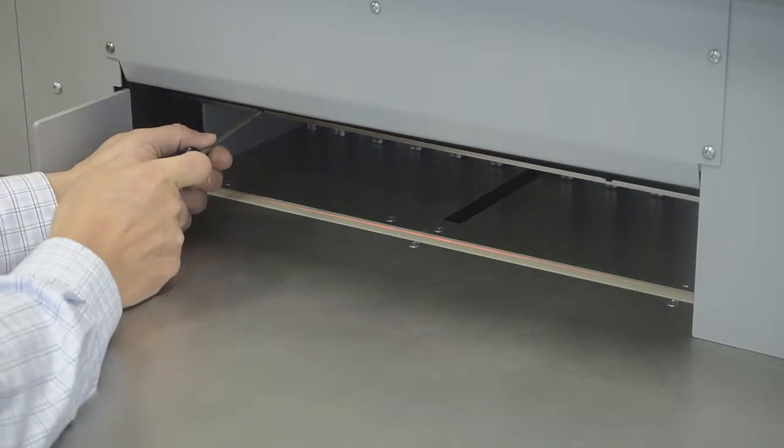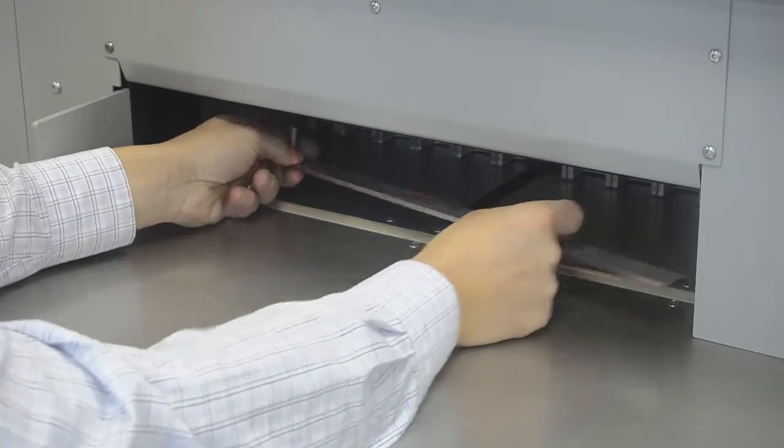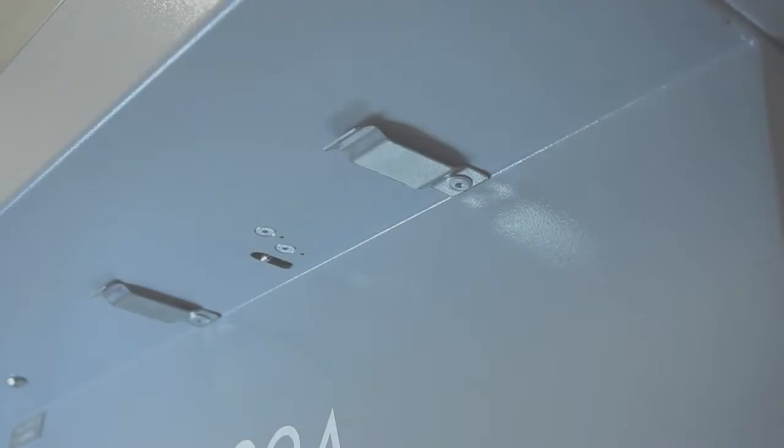The false clamp can be removed to decrease the minimum cut length, and is easily stored under the front table of the cutter. When being stored, a flag switch is activated, which automatically changes the minimum cutting size.